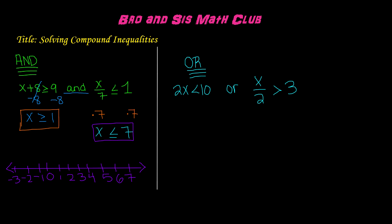We have 1, and remember, if it is greater than or equal to or less than or equal to, then it will be a shaded dot. If it's just greater than or less than, it will be an open circle. In this case, we have a greater than or equal to symbol and a less than or equal to symbol, so we will have closed or shaded circles on both points — a shaded circle on 1 and a shaded circle on 7.